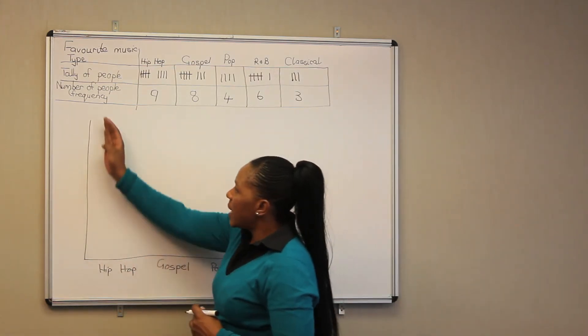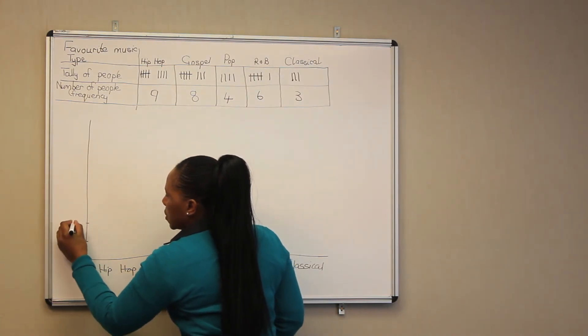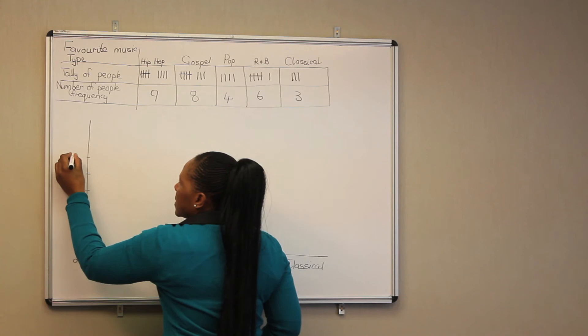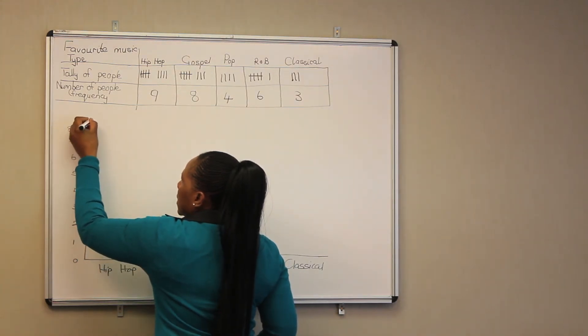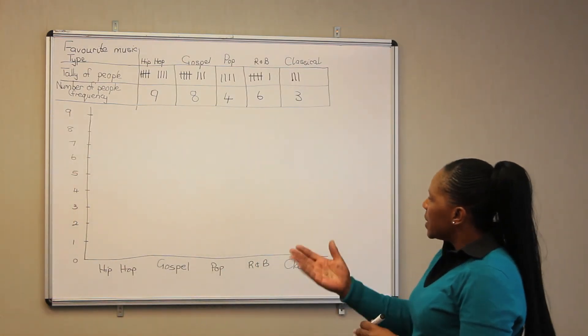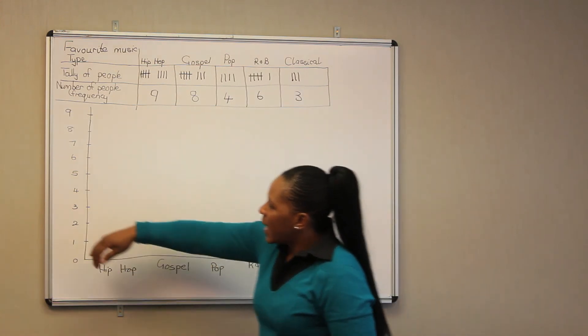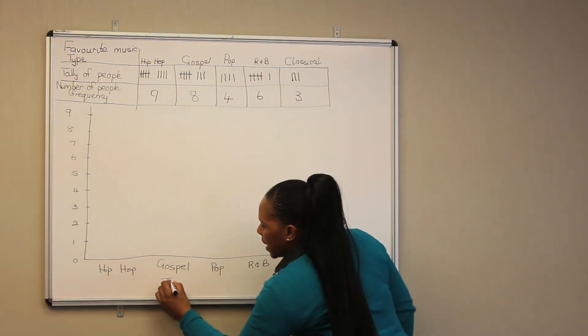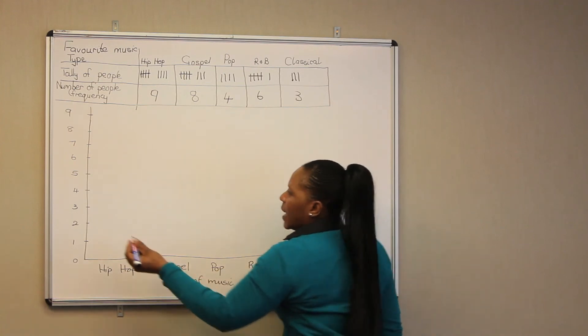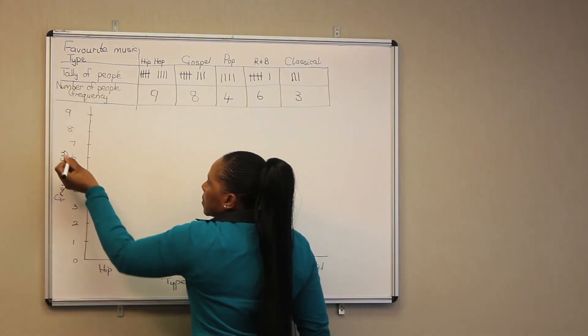Now, on this side, we are going to put our frequency. So we are going to start from zero, one, two, three, four, five, six, seven, eight, nine. All right. With this information, we are also supposed to label what this is and what that is. So this is the type of music, and this is the frequency.